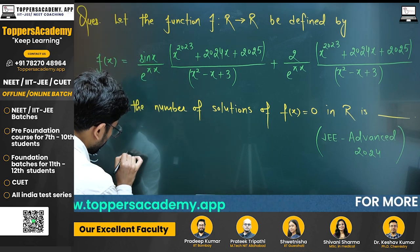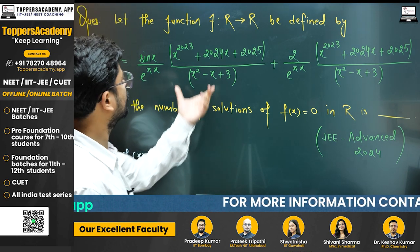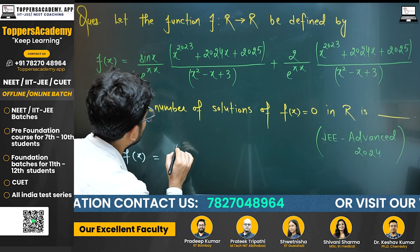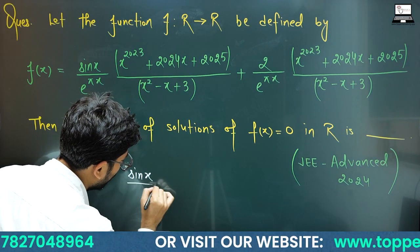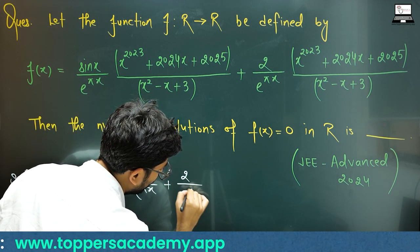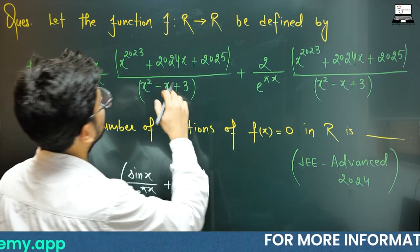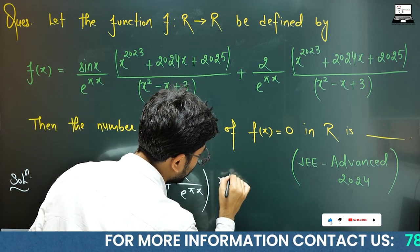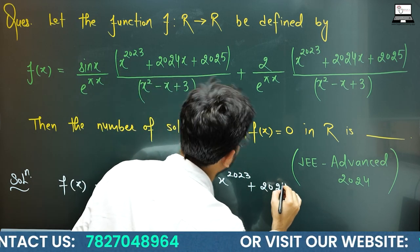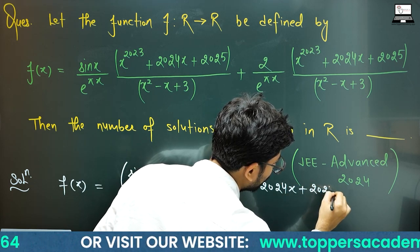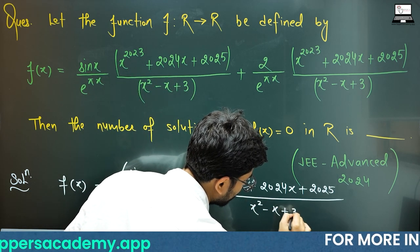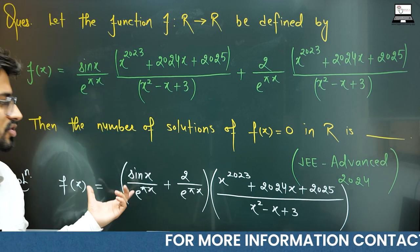First of all, if you write your f(x), you can observe this quantity is the same as this one. So you can say this is sin(x) upon e^(πx) plus 2 upon e^(πx), multiplied by the expression x^2023 plus 2024x plus 2025 divided by x² minus x plus 3. So this is your function.